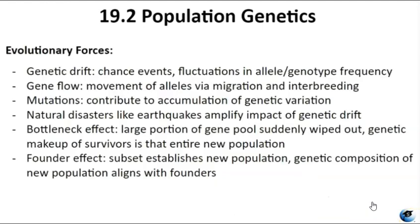Genetic drift, influenced by chance events, causes fluctuation in allele and genotype frequencies within a population. Certain individuals may have more offspring due to being at the right place and time, leading to an increase in frequency for certain genes. Gene flow — the movement of alleles through migration — plays a significant role in evolution, as populations experience fluctuations as individuals disperse and introduce new genetic variation in different locations. Mutations drive population diversity: harmful mutations are eliminated by natural selection while beneficial ones spread. Natural disasters amplify genetic drift's impact through the bottleneck effect, wiping out a portion of the gene pool.